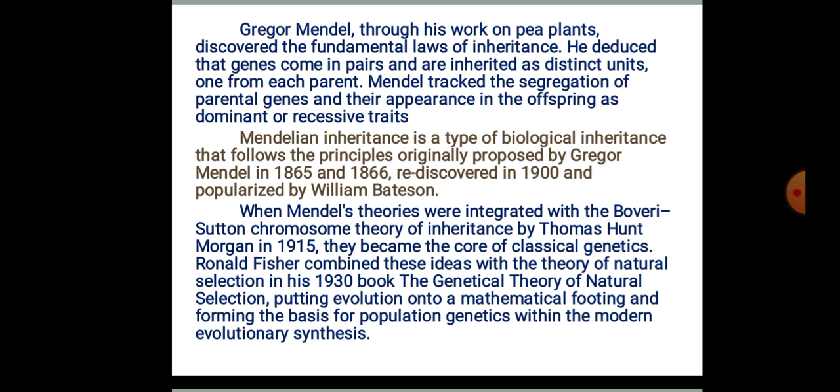Boveri-Sutton gave the chromosomal theory of inheritance. Now here we understand one more name: Thomas Hunt Morgan, also called T.H. Morgan. In 1915, these ideas became the core of classical genetics — whatever these scientists contributed is nothing but the core of classical genetics.